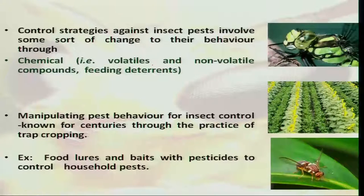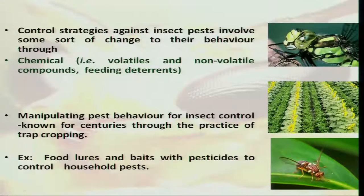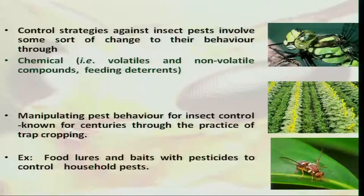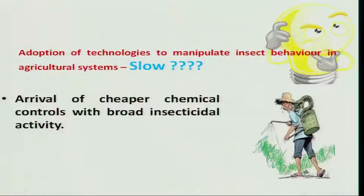Insect behavior is driven by chemicals produced either by insects or by host plant species. Some of the volatile and non-volatile compounds produced by plant species actually deter insect species by changing their behavior. This is involved in the pest management strategy through trap cropping systems. Another way of modifying insect behavior is through food lures and baits used in pest management, both in household and field settings. However, even though we have a long history of this technology, its adoption in agriculture has been slow.